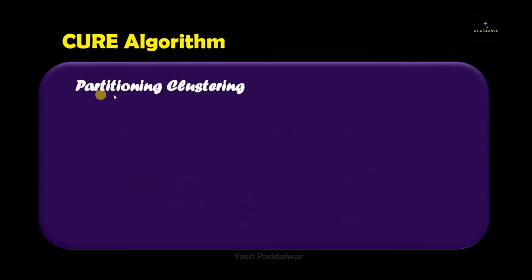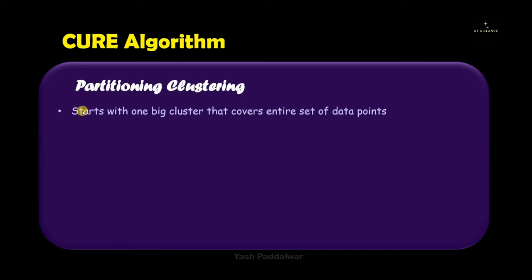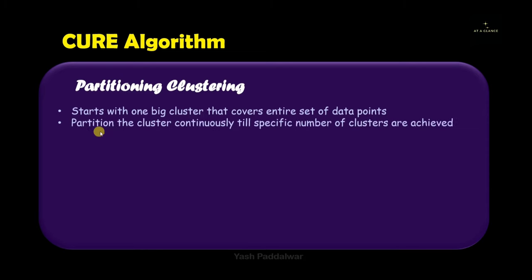Now let's move on to the types of clustering we need to understand before learning the CURE algorithm. The first type is partitioning clustering — the name itself tells you that we are going to partition the clusters. We start with one big cluster covering every single data point in the entire dataset, and then divide it slowly and steadily until the specified number of clusters is achieved.